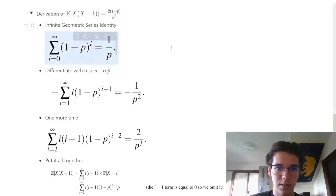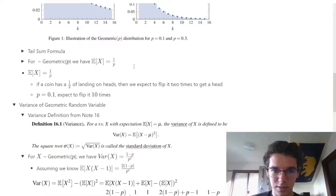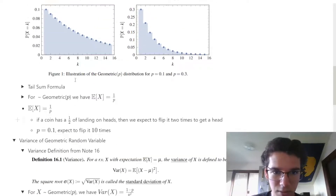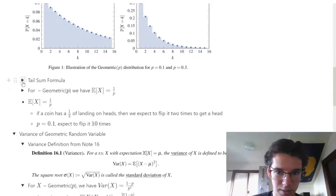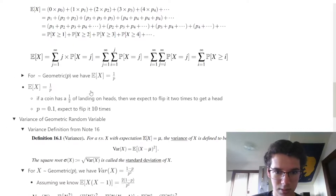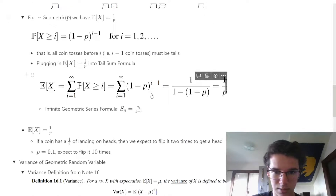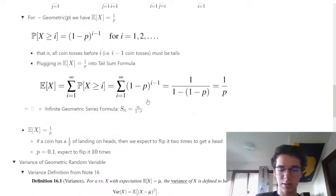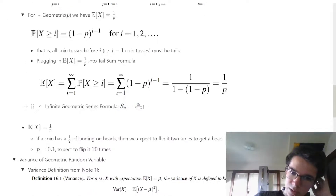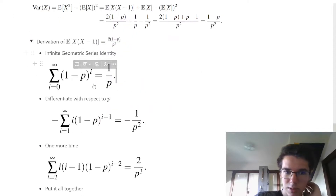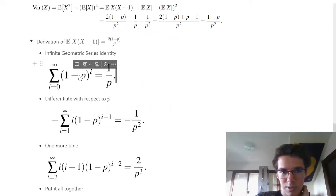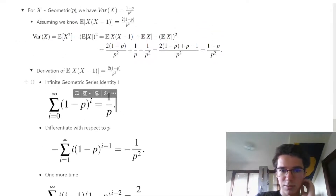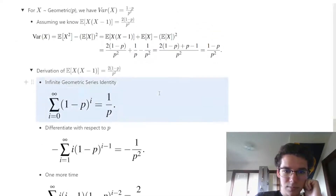Using the infinite geometric series identity: our starting term is 1, our ratio is 1 minus p, so 1 minus (1 minus p) yields 1 over p. Now we're going to differentiate both sides with respect to p.